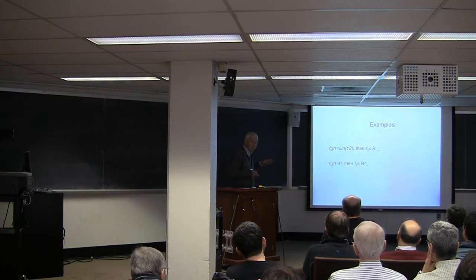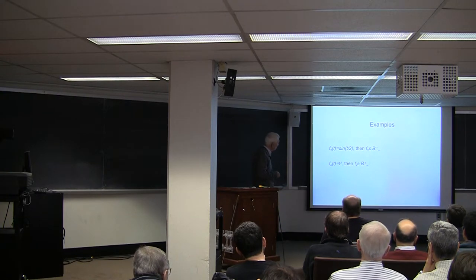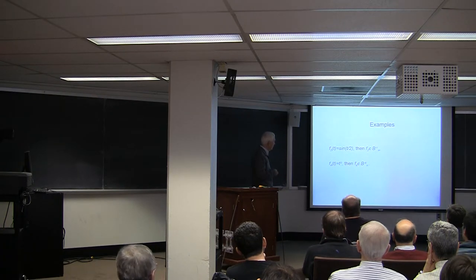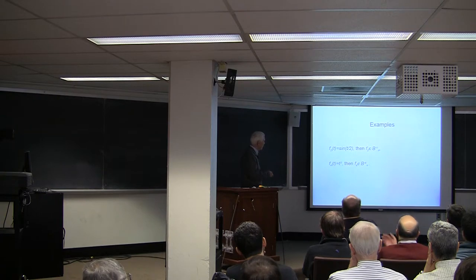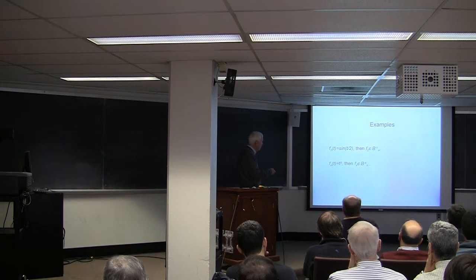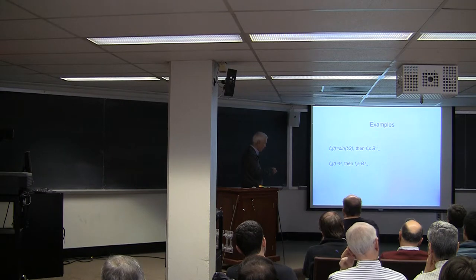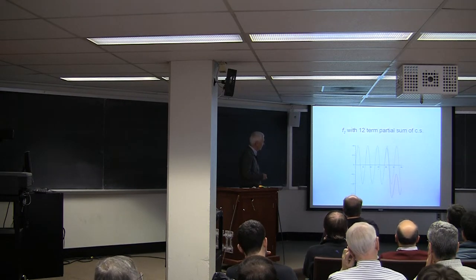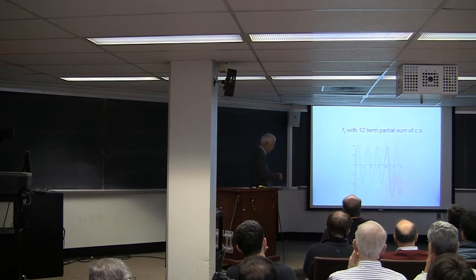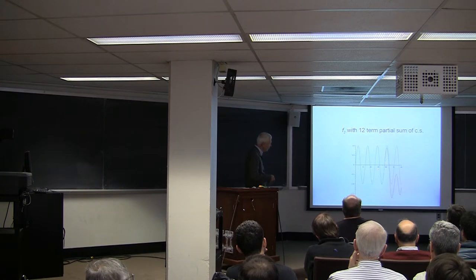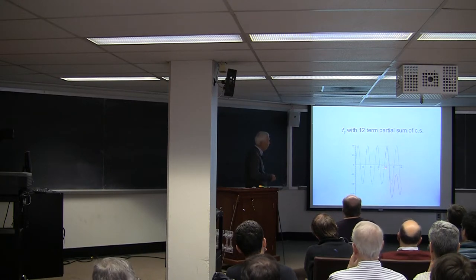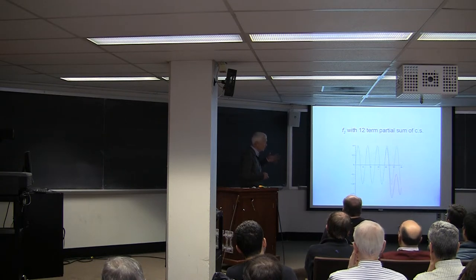For functions not in the traditional Paley-Wiener space but in this extended Paley-Wiener space, let's look at a couple of examples. Suppose f_2 is given by sine of t over 2 — it's in one of these generalized Paley-Wiener spaces, b sub pi upper minus 1. The green line is the original f_2, the sine function, and the red line is the approximation. It's quite good up to about t equal to 35, and this is a 12-term partial sum.